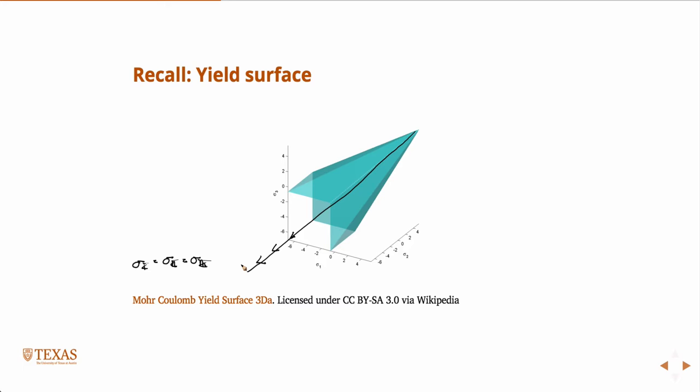But remember, out here is tension, and rocks are very weak in tension. So that's why the cone closes off. It gets bigger in this direction because rocks get stronger in compression. That's how you can remember it. I think everybody knows intuitively a rock is weak in tension, but very strong in compression. So the surface gets larger in compression, weaker in tension.